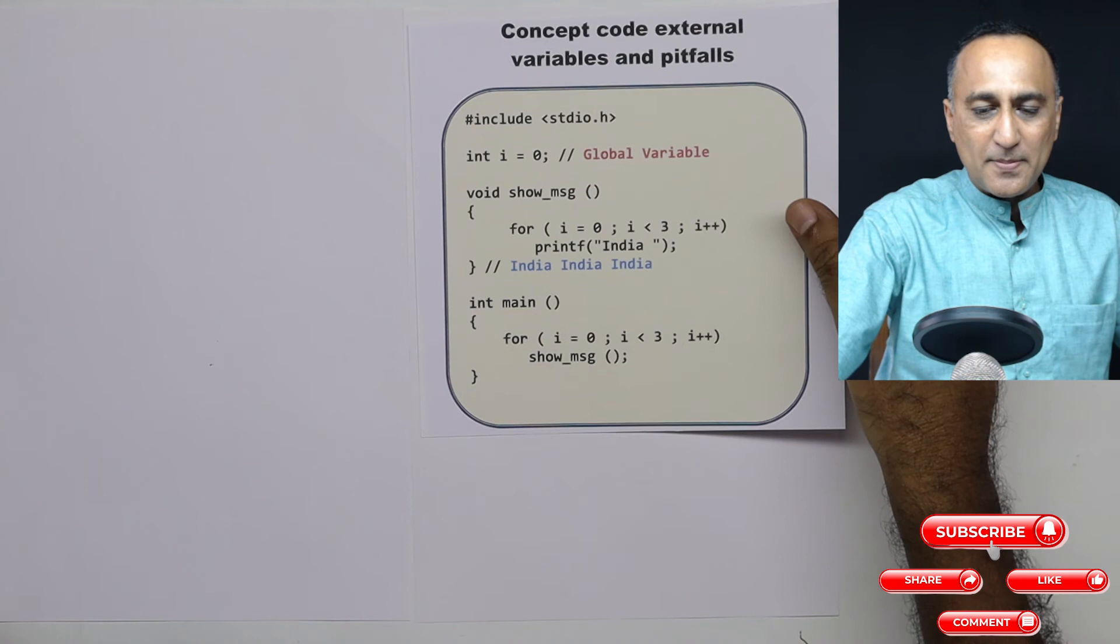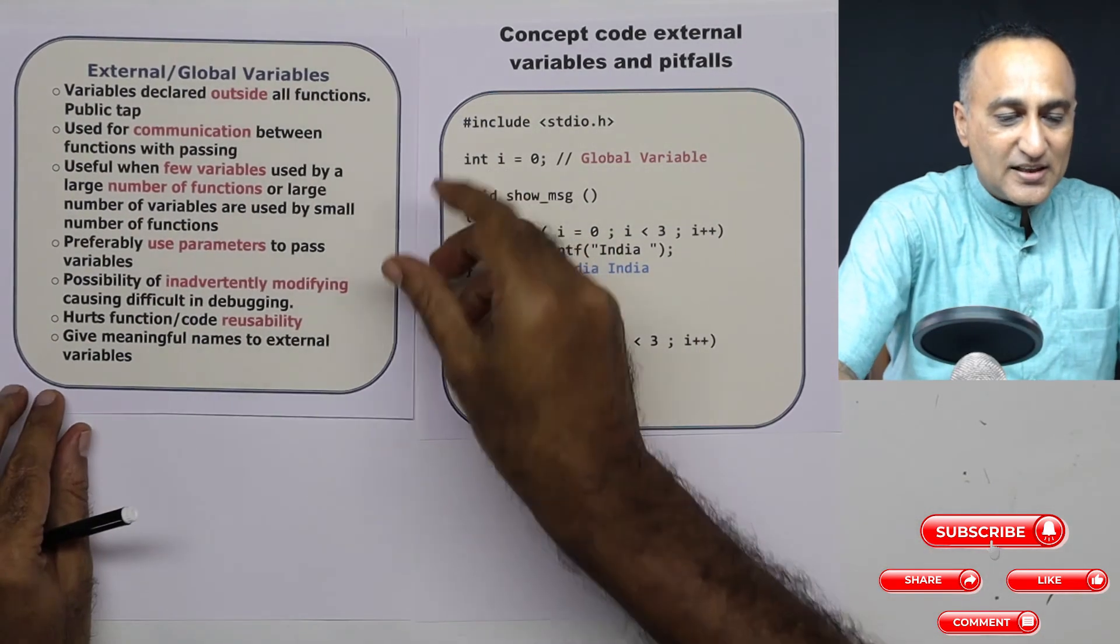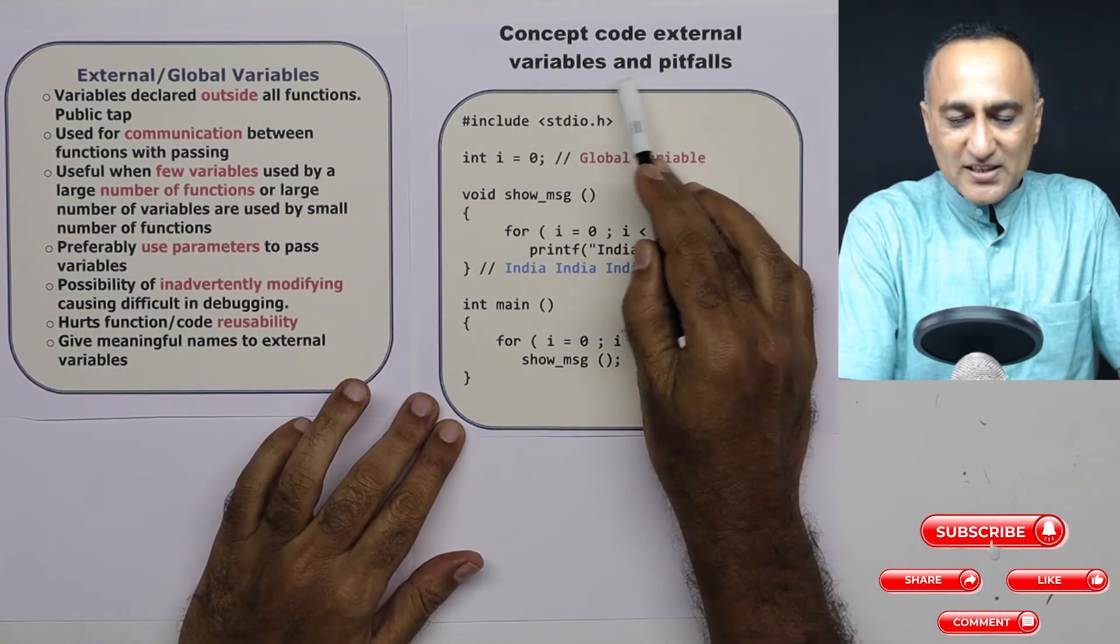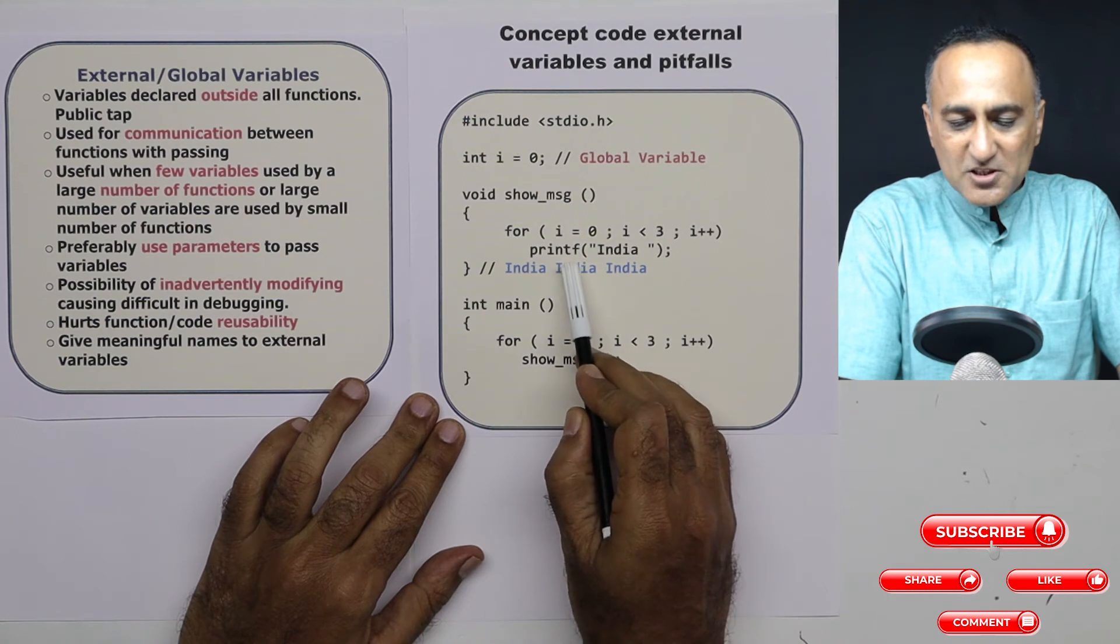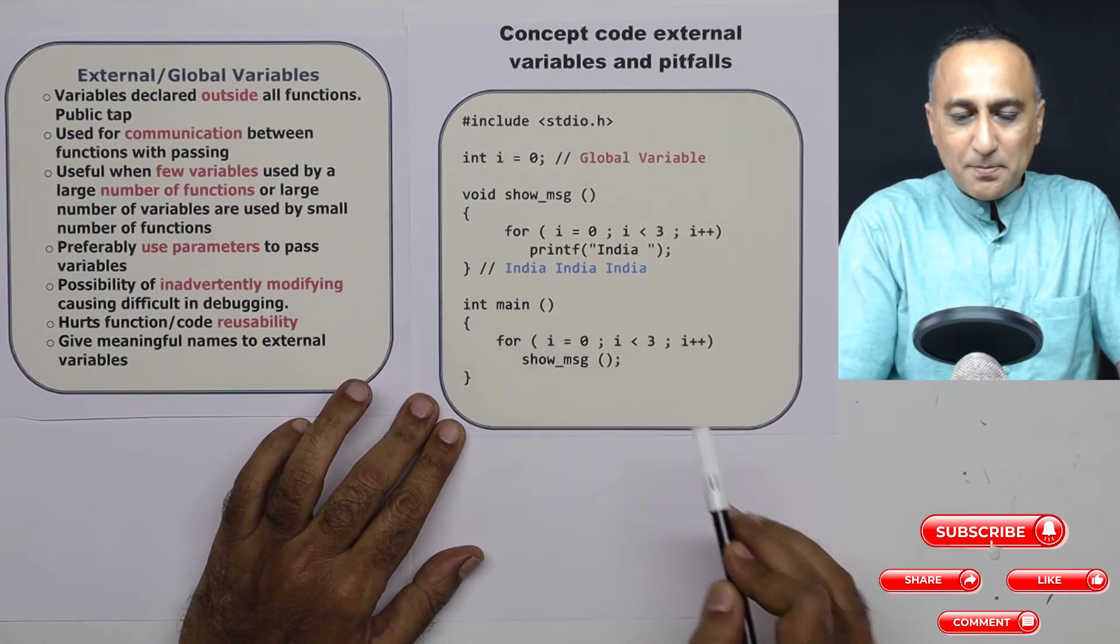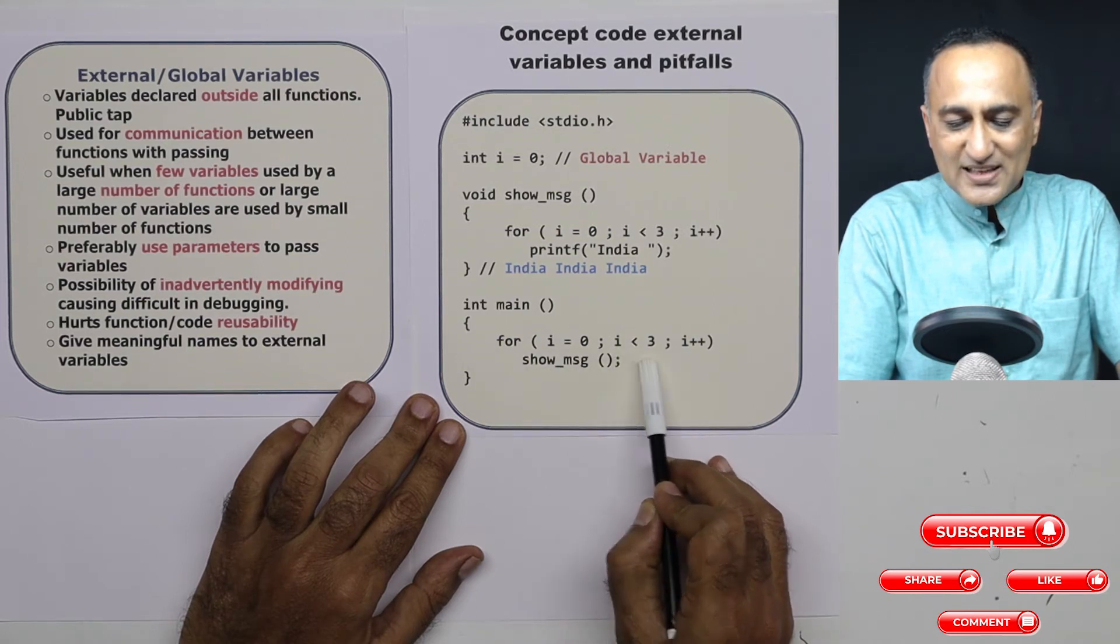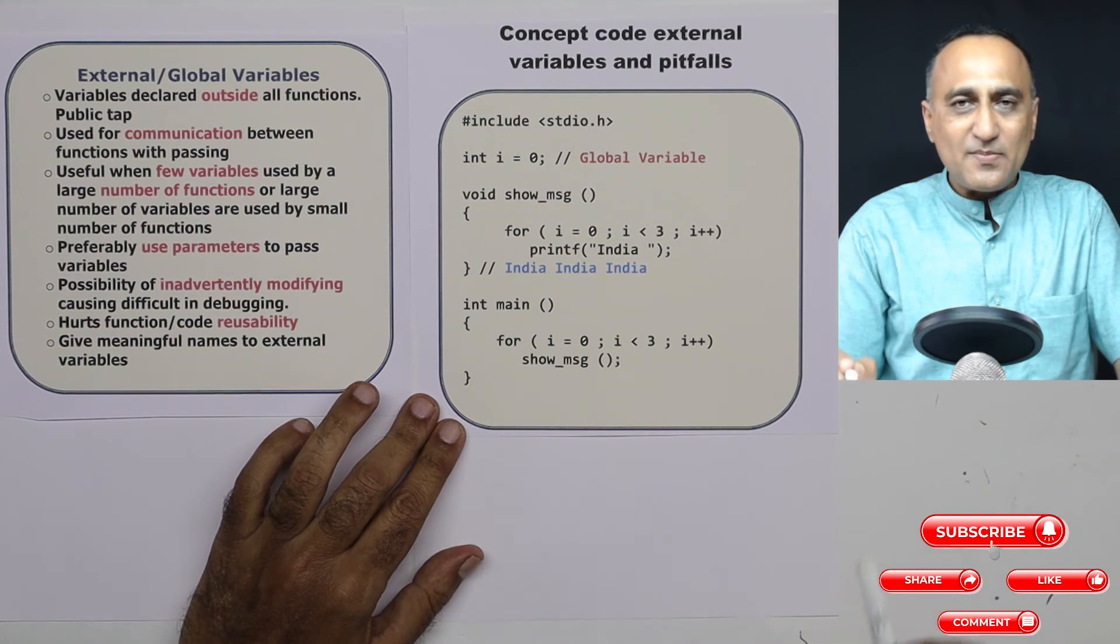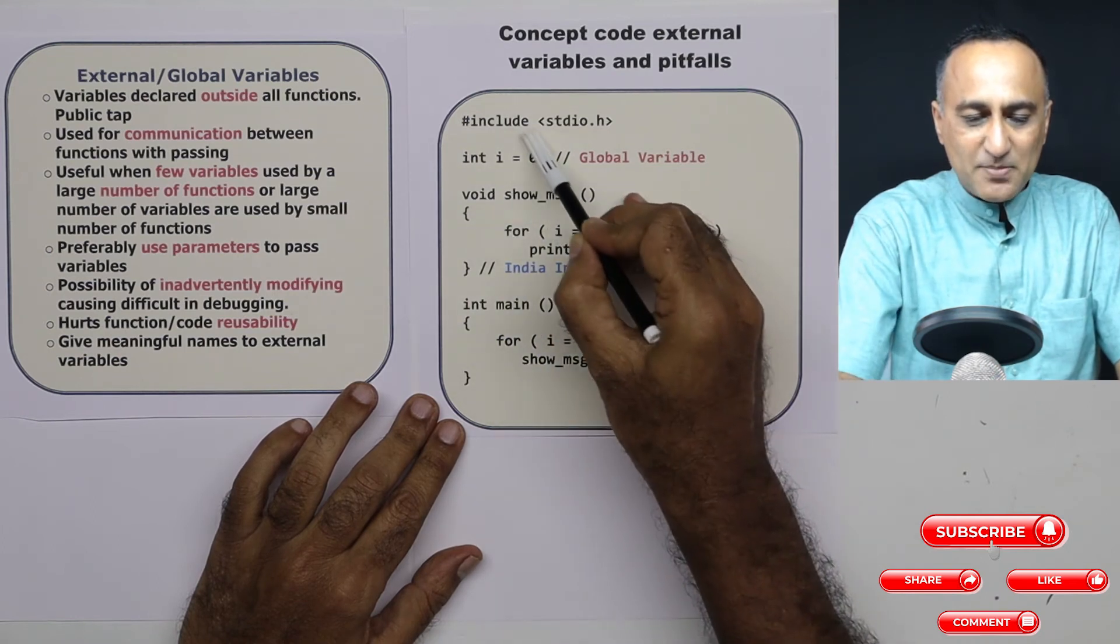Now what we shall do is we shall try to understand through a program what exactly we mean by external variables and what are the drawbacks or pitfalls that we need to avoid when using external variables. So first take a look at this concept code of external variables. Now I have a function called show_msg where in that message I am trying to print the message India. After space, I have a function called main. In main I have declared a variable, I have taken a variable i equals 0, i less than 3, i plus plus, same here for i equals 0, i less than 3, i plus plus. But this time what different I have done is I have declared i outside any of the function. That means this is a global variable.